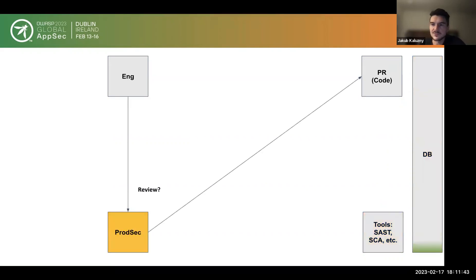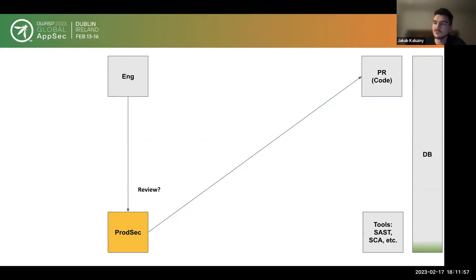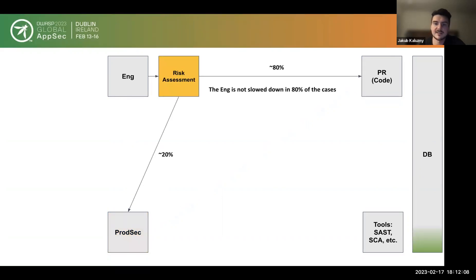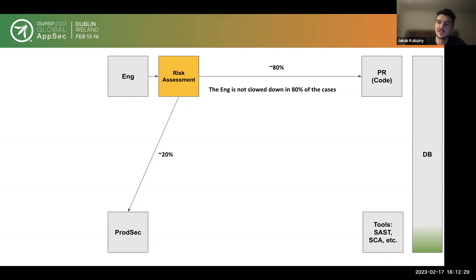The next step is introducing manual or semi-manual review by product security. Before code is merged, we want to review it — but we can't review every change, so we need a mechanism to decide. A simple risk assessment tells us whether it's worth reviewing. In 80% of cases the code is low risk and goes directly to the repository; in one fifth of cases, product security does a security review.